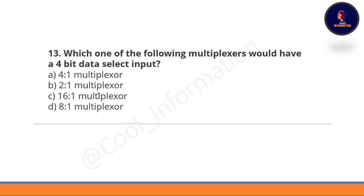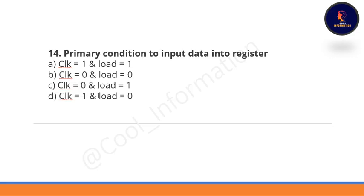Question 13: Which one of the following multiplexers would have a four-bit data select input? Option A: 4-to-1 multiplexer, option B: 2-to-1 multiplexer, option C: 16-to-1 multiplexer, option D: 8-to-1 multiplexer. The correct option is C, which is the 16-to-1 multiplexer.